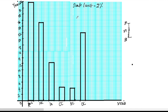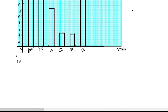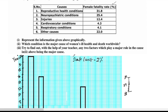For the second question: try to find out with the help of your teacher any two factors which play a major role in the causes listed above being the major causes. We will discuss two factors related to reproductive health conditions for women's health and death.